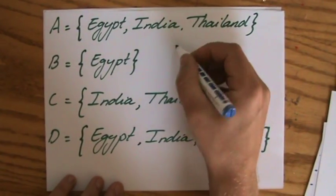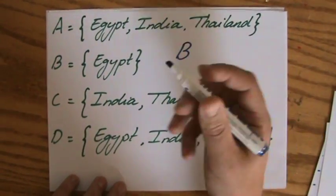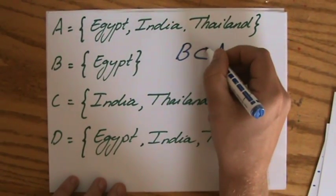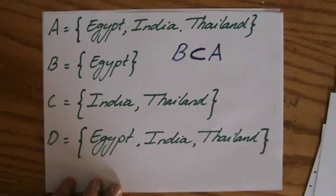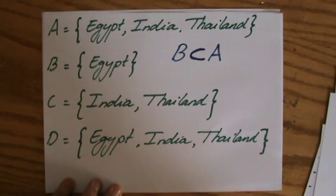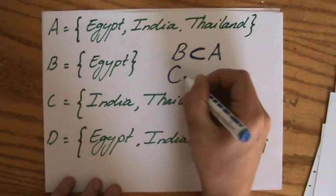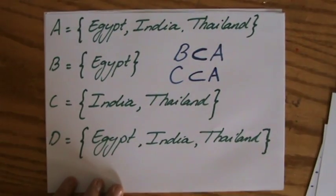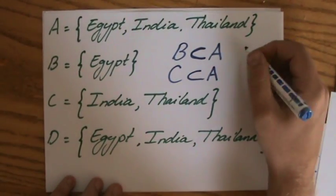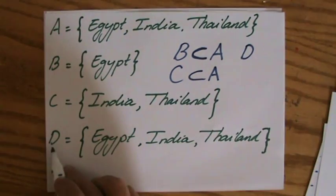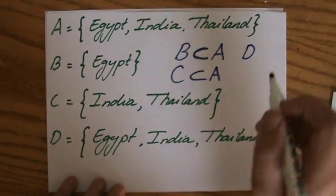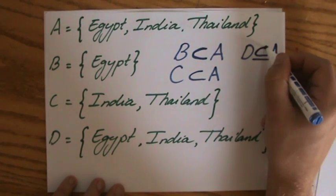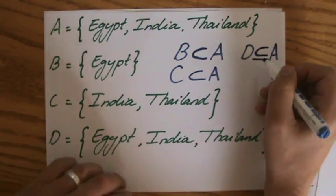Set B is a proper subset of A. That's the notation for it. I'm going to show you in a minute what that exactly means. I can also say that set C is a proper subset of A. And finally, I can say that D, set D, is a subset of A. So not a proper subset, but just a subset. It has a little line there. Now what does that mean?